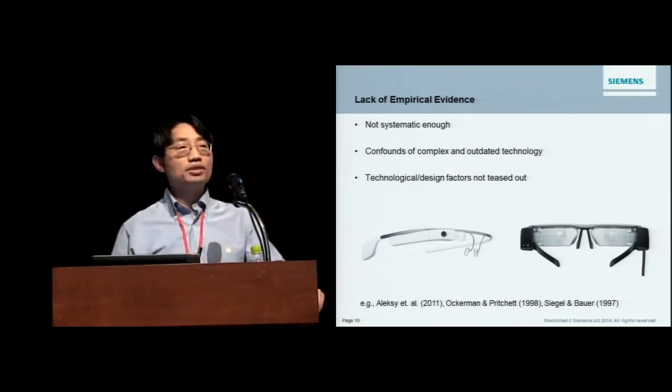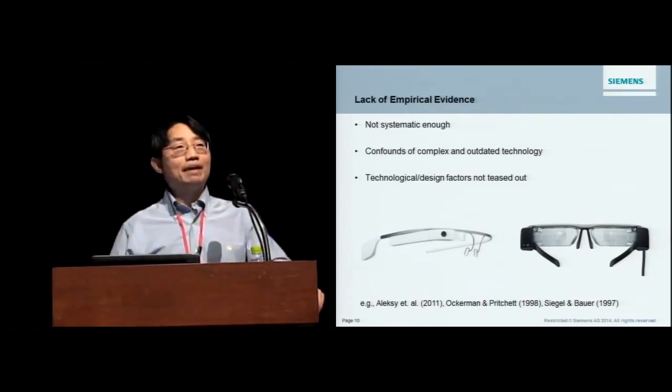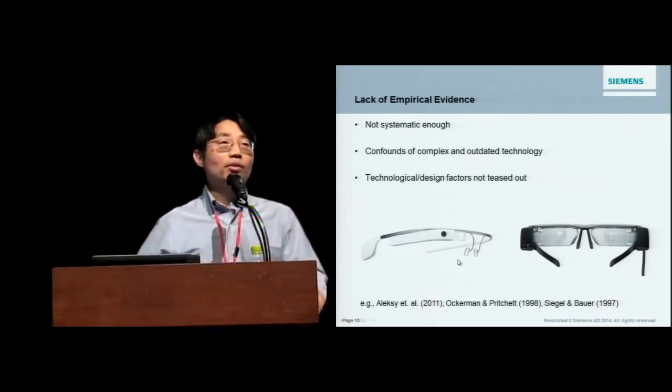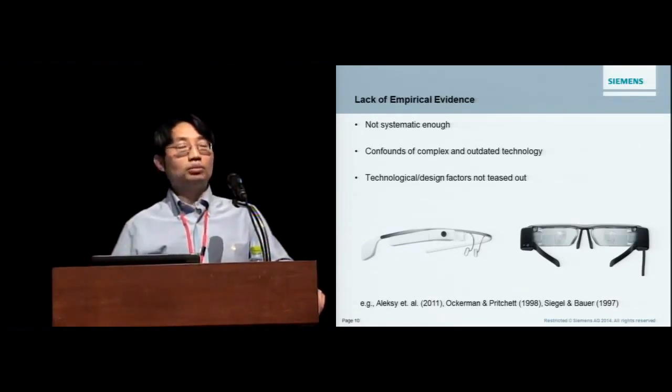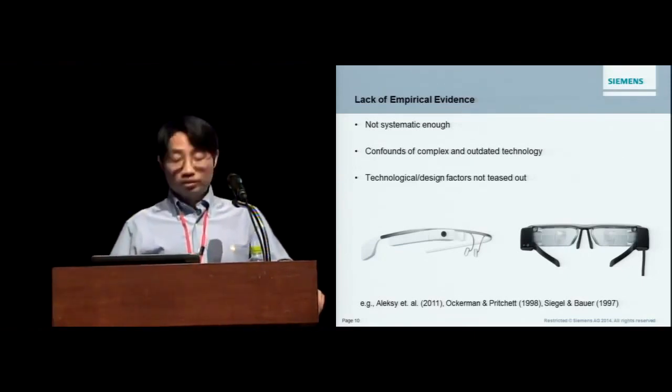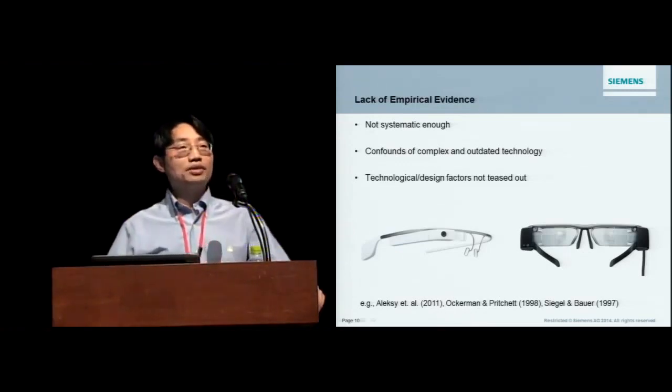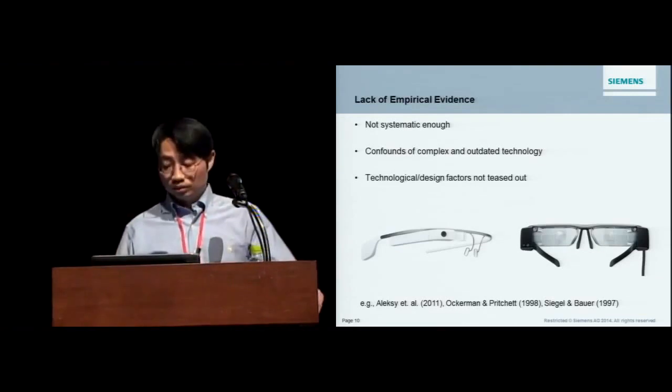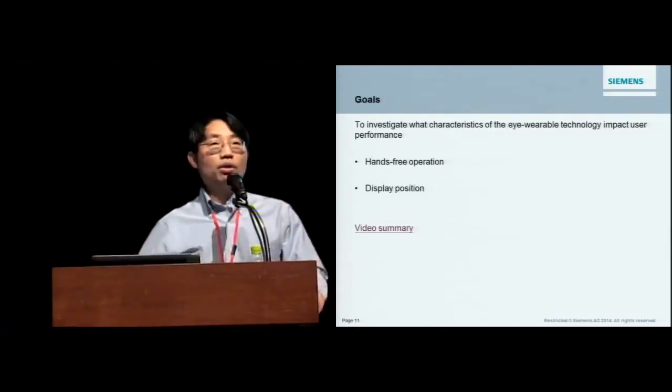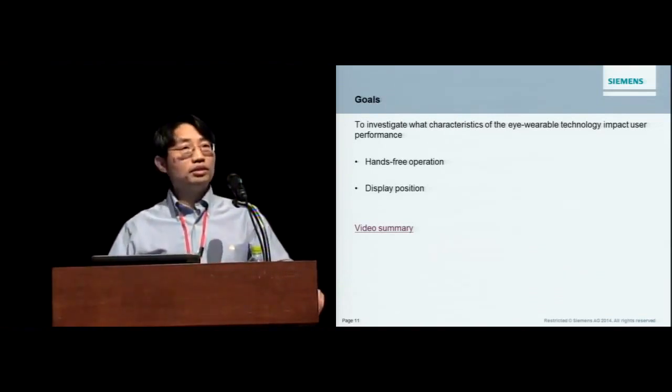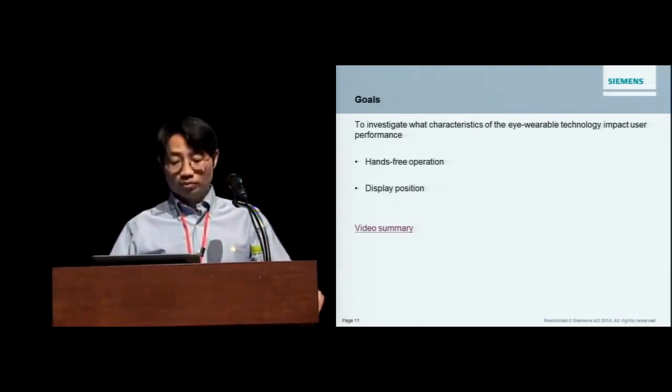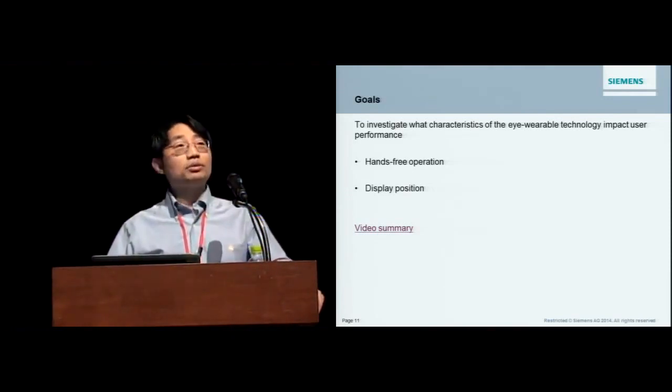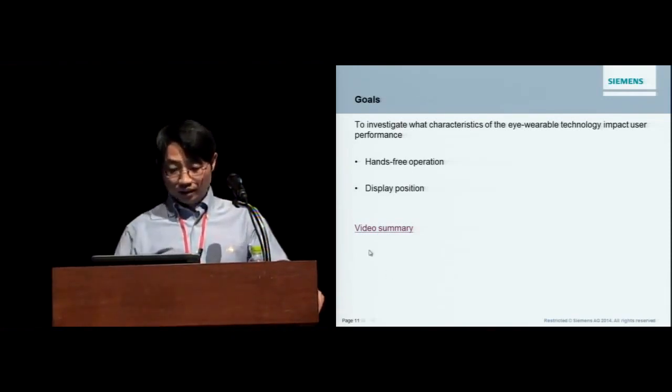And those technology factors certainly are not well teased out. And take these two glasses, for example. So Google Glass to the left, as you can see, the design is very different from the Epson Moverio to the right. And in fact, we call it eye-wear peripheral. There's only one display, and they purposely put it on top of your upper right eye corner. So it's at your peripheral, and it's not really blocking your field of view. And then the other Epson Moverio, like many other glasses, they directly put the display in front of your eyes.